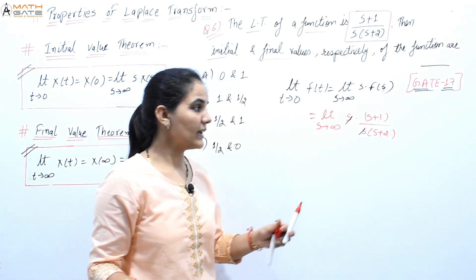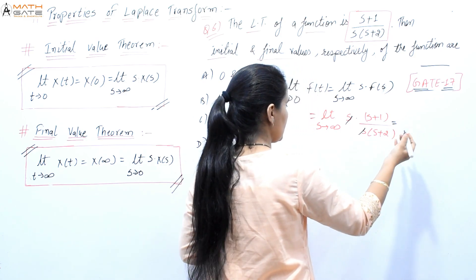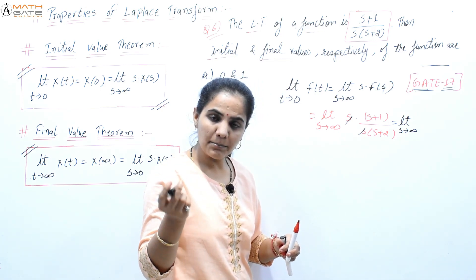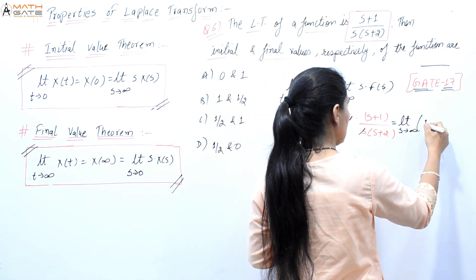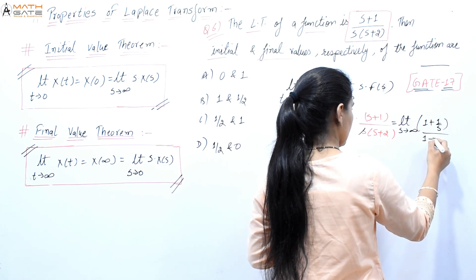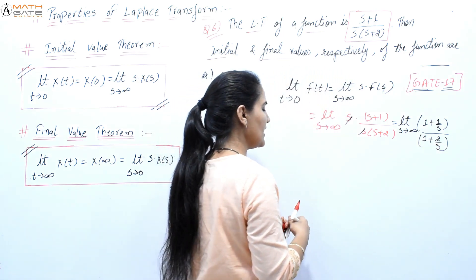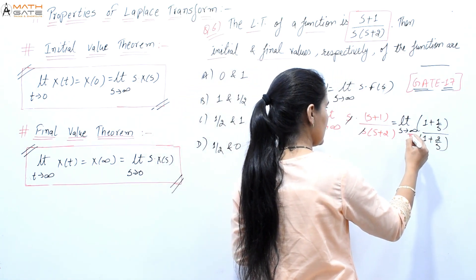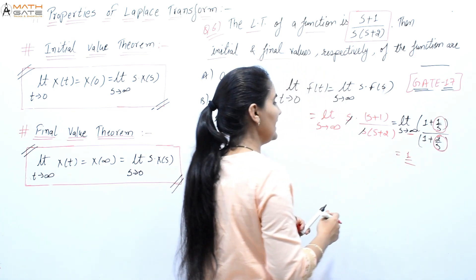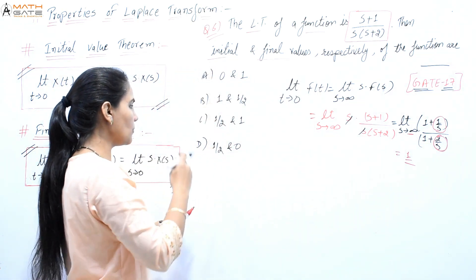Since we have s→∞, we convert to 1/s form. Taking s common from numerator and denominator: s·(1 + 1/s) / (1 + 2/s), and s cancels. Applying limit s→∞, both 1/s terms go to zero, giving 1/1 = 1. So the initial value is 1. Looking at the options with initial value = 1, only one option matches.